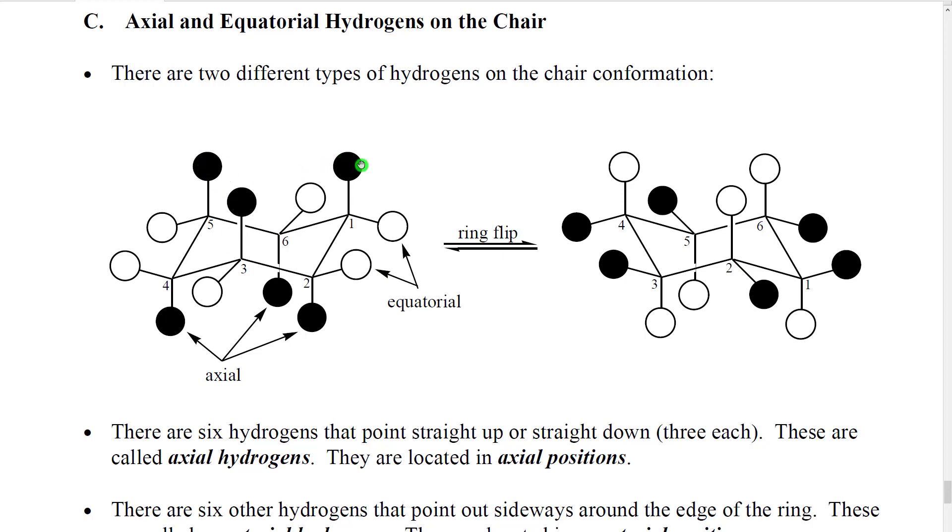Where one group on every atom will be perfectly parallel to the edge of the paper, or in other words, it'll be sort of parallel to the axis of this ring, looking from a side view. The other group on a given atom will be pointing out sideways, away from the center of the ring.